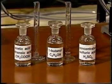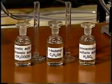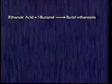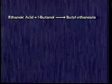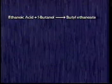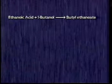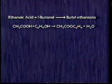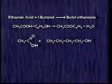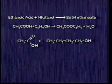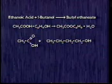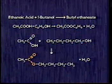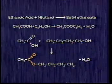This is the chemical reaction: ethanoic acid, or acetic acid, plus 1-butanol gives us the product butyl ethanoate. Looking at the structural formula, we can see how the ester is formed — esters contain this basic structural unit.